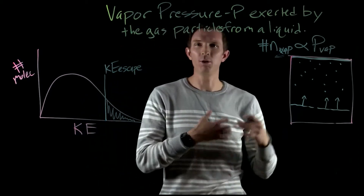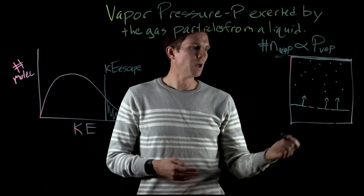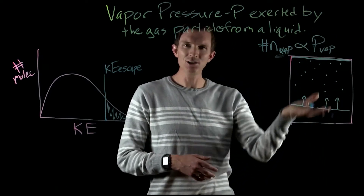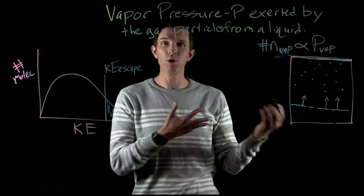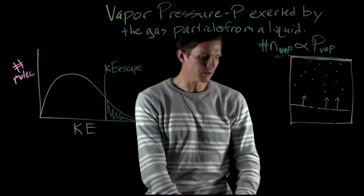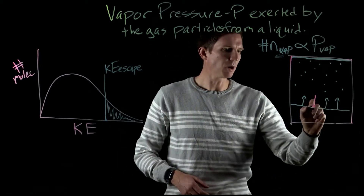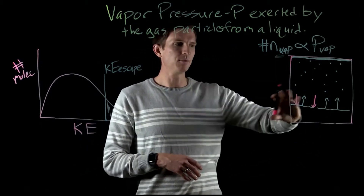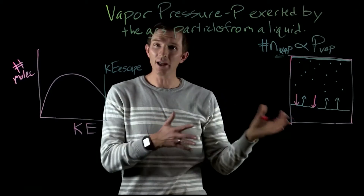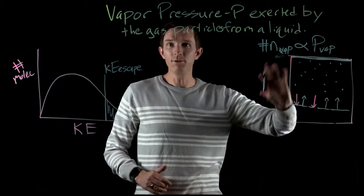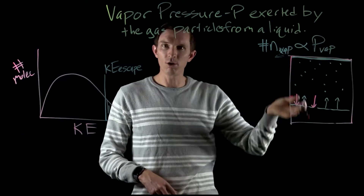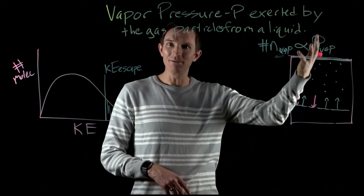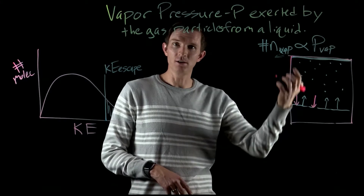So we want to think about what's happening and what factors affect this. As particles leave, they're all moving around. Initially we have a really high evaporation rate relative to our condensation rate, so we see some particles condensing back down. Initially: high evaporation rate, low condensation rate, because we only have a few particles in the gas phase. As more and more particles come out into the gas phase, that condensation rate starts to increase.